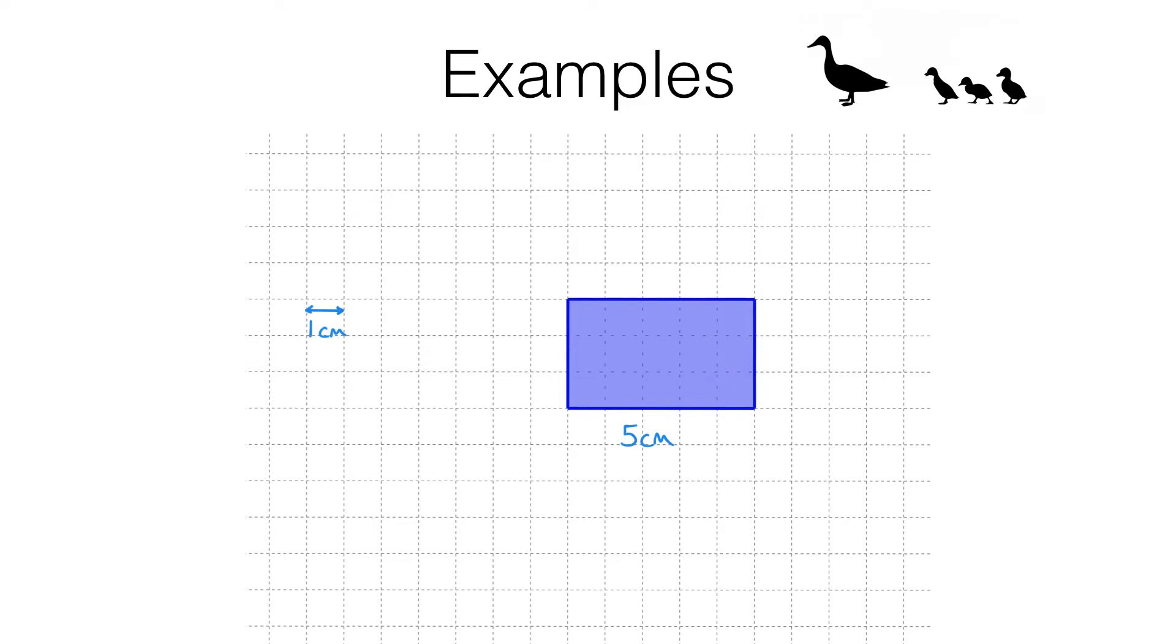To measure how much space it takes up in two dimensions I need to measure its area. On this grid each square has an area of one square centimetre, which we write like this. We can count 15 of these squares in this rectangle. So it has an area of 15 square centimetres or 15 centimetres squared.